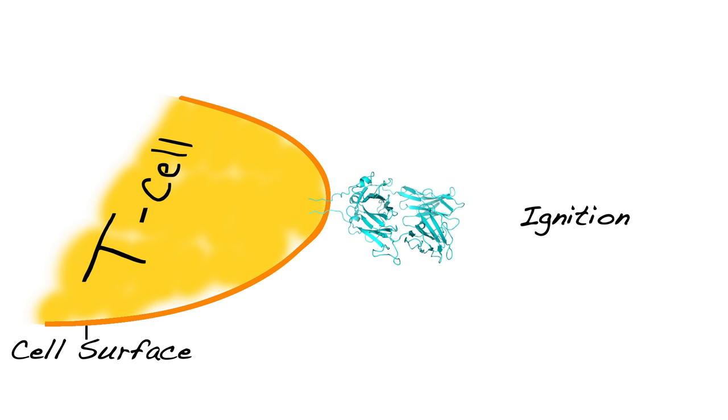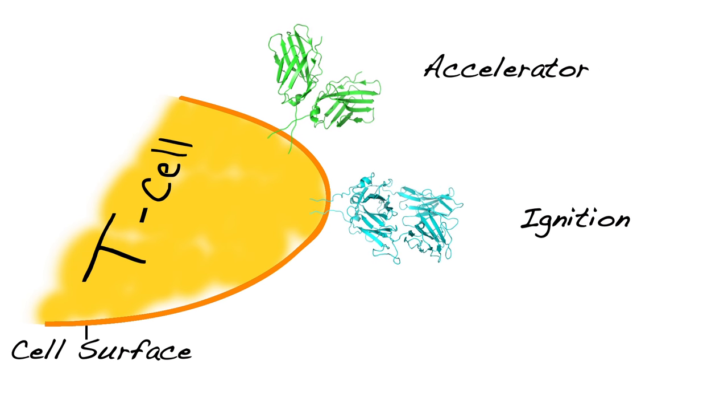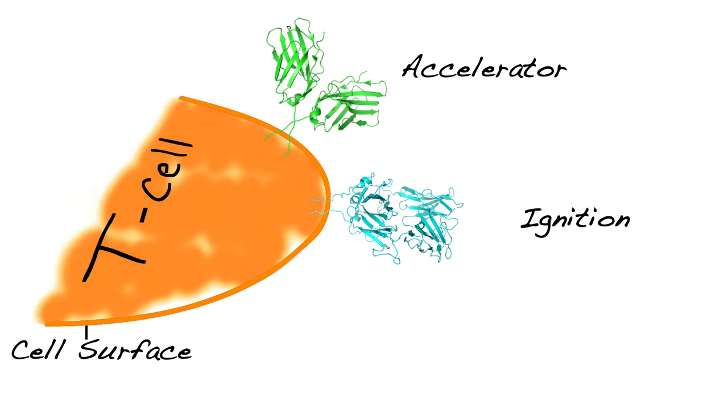Just like a car, you don't go anywhere until you step on the accelerator. There's another set of proteins, the so-called accelerators, that enhance or stimulate the T cell function so the T cell can actually kill the malignant cell that it's recognized.